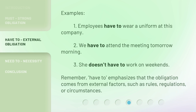Examples. One: employees have to wear a uniform at this company. Two: we have to attend the meeting tomorrow morning. Three: she doesn't have to work on weekends. Remember, 'have to' emphasizes that the obligation comes from external factors, such as rules, regulations, or circumstances.